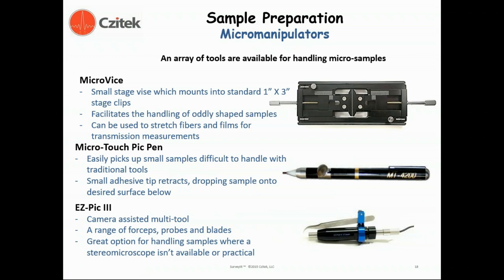Other miscellaneous tools can help simplify analysis. A microvise is useful for holding an oddly shaped sample in a particular orientation — it grips the sample and interfaces into the standard one-by-three-inch stage clip. The microtouch pen allows you to pick up small samples with a very small adhesive tip; when the tip retracts, the sample drops onto the desired surface. If your hands are not steady, various micromanipulator options incorporate imaging as part of the system, and more expensive solutions can completely automate the process of moving and transferring extremely small samples.